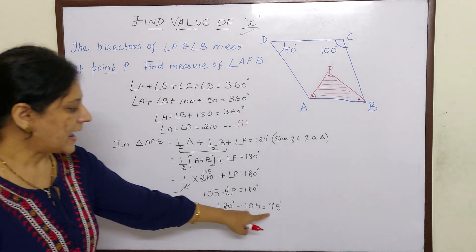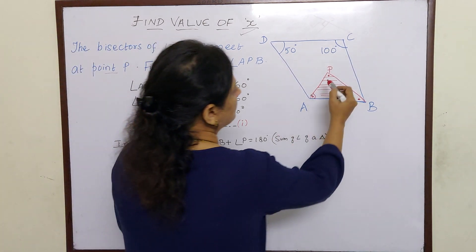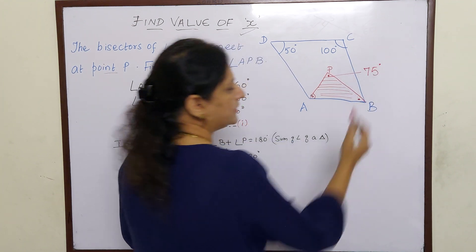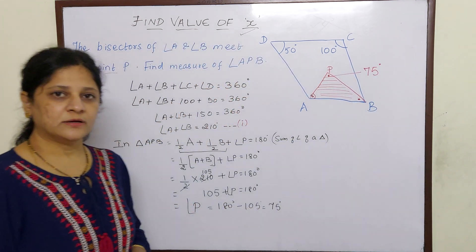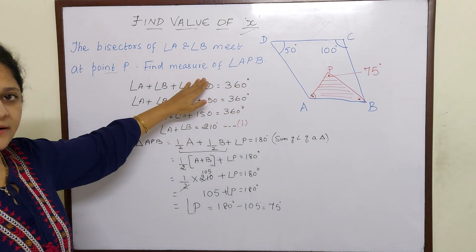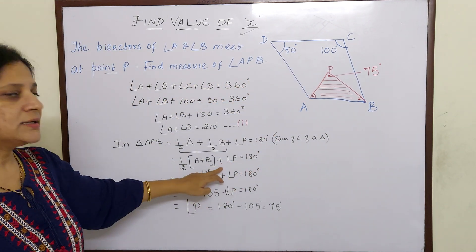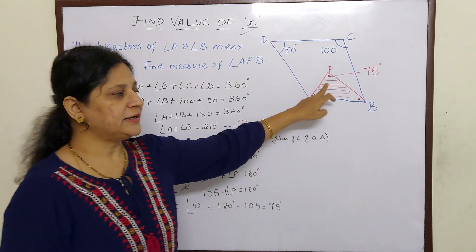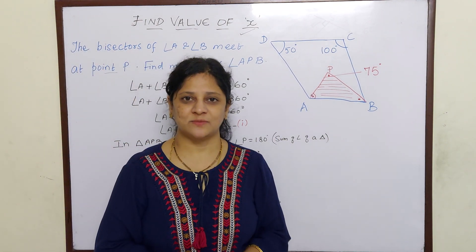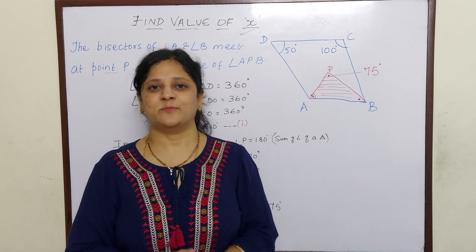So we have got angle P as 75 degrees. Here we had to work in two steps: one using 360 for the quadrilateral, and another using 180 for the triangle. Hope you understood this. See you in the next lecture with many more such problems.